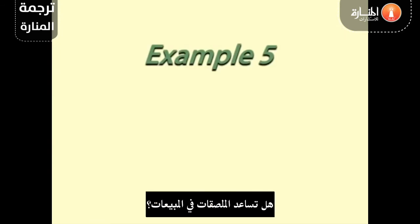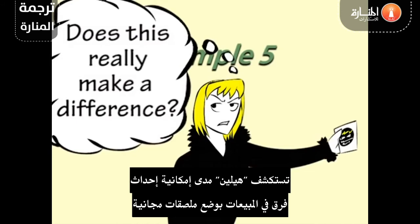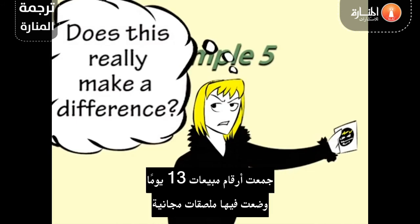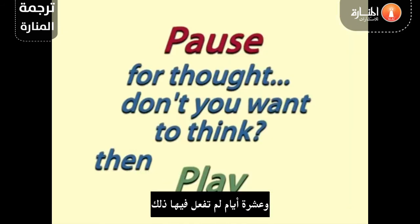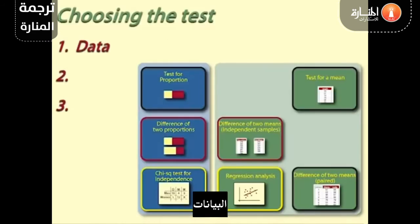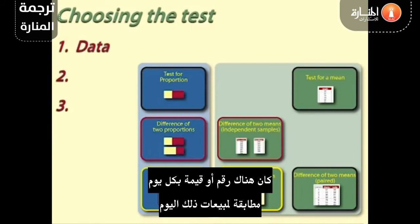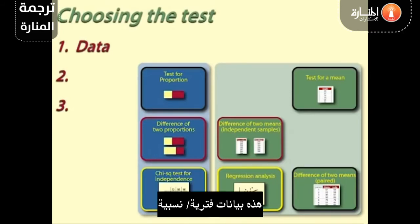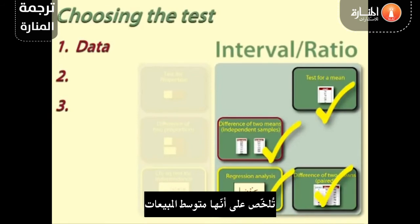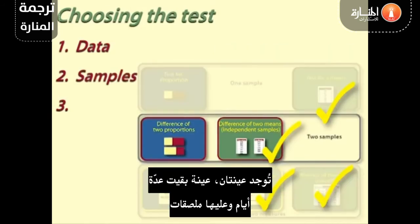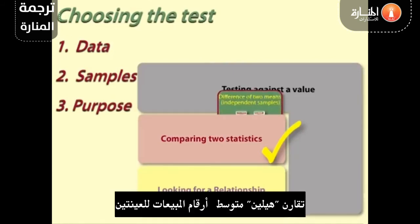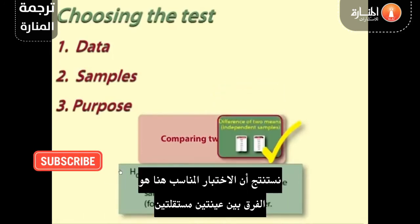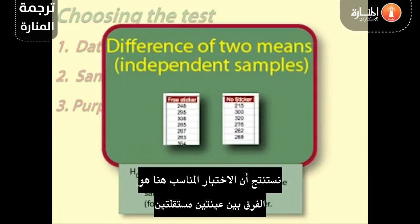Example 5: Do stickers help sales? Helen is exploring whether having free stickers makes a difference to sales. She has the sales figures for 13 days when she did offer free stickers and 10 days when she did not. 1. Data: For each day, Helen has a number corresponding to the sales for that day. This is interval ratio data, summarised as a mean number of sales. 2. Samples: There are two samples — one for days with stickers and one for days without. 3. Purpose: Helen is comparing the average sales figures for the two treatments. The test to use is difference of two means independent samples.